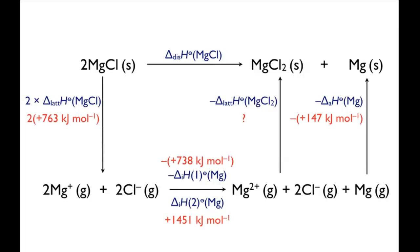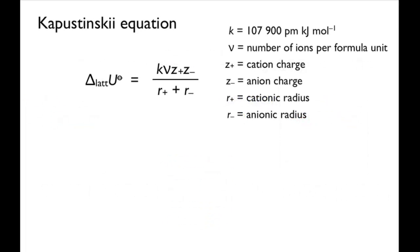To use this enthalpy cycle to calculate the enthalpy change of disproportionation, we need to know the second enthalpy of ionization for Mg-2-plus, which we can look up, and the lattice enthalpy for MgCl2, which we can calculate using the Kapustynski equation, in a similar way to what we did with MgCl.